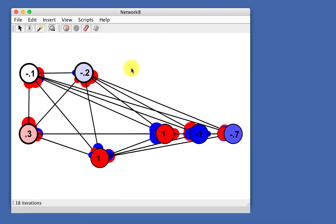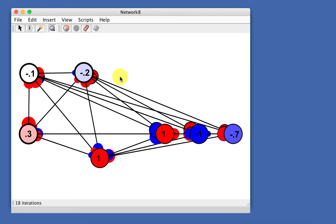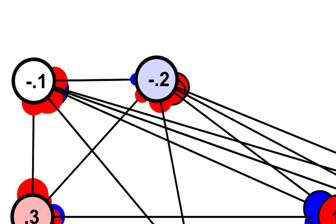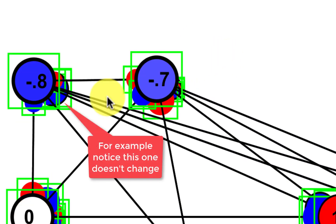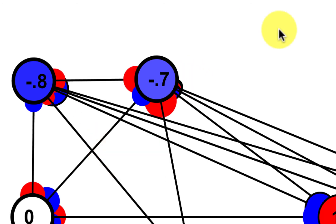You can do the same thing with weights. If you select some of these weights and do Shift-F, it freezes the weights and shows that with a bold-faced line around them. That's helpful if you're doing a Hebbian simulation. If you make all these weights Hebbian and run it, you can see that some of them are changing, but the ones that are frozen just stay the same. You can use that to very quickly make little Hebbian associators.